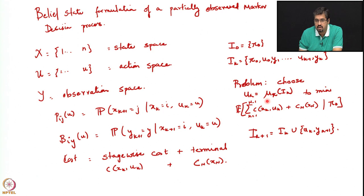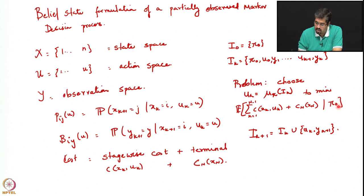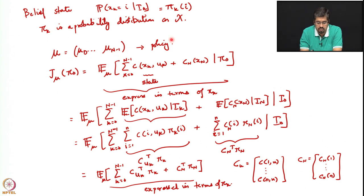The problem was to choose a policy — a sequence mu_0, mu_1, ..., mu_{N-1} — where each mu_k is a function of the information i_k, resulting in the control action u_k, in order to minimize the total cost starting from an initial state distributed according to pi_0. Note the change in notation: pi, which earlier denoted policy, now denotes the belief state, and the policy is simply denoted by mu — the entire policy vector mu_0 to mu_{N-1}.